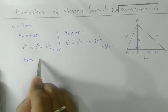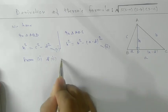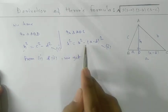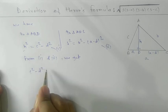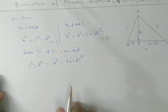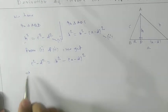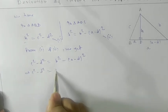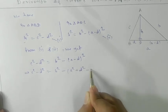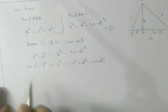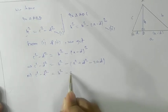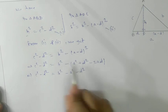From equations one and two, since both equal H², we can write: C² − D² = B² − (A − D)². Expanding the bracket: (A − D)² = A² + D² − 2AD. So C² − D² = B² − A² − D² + 2AD.